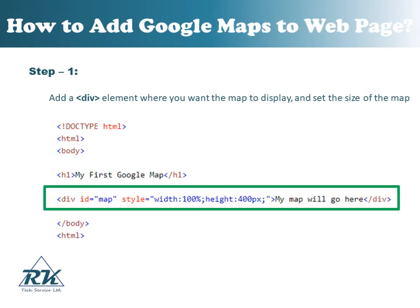How to add Google Maps to a web page. Start with a simple web page, and add a div element where you want the map to display, and set the size of the map. Please find the example to add a div element to implement the Google Map. You can add a div element as highlighted in this example.